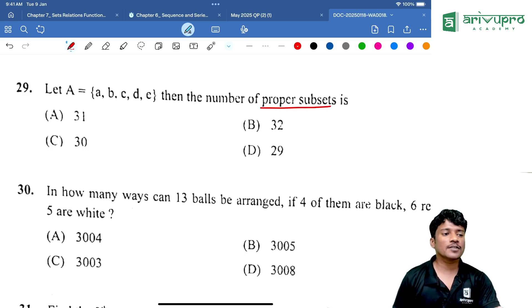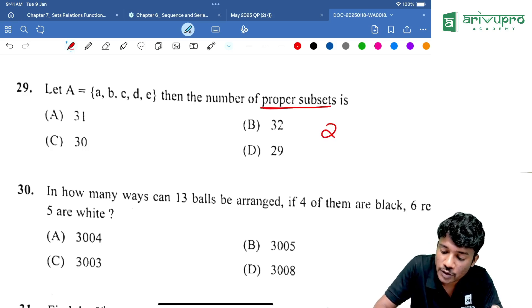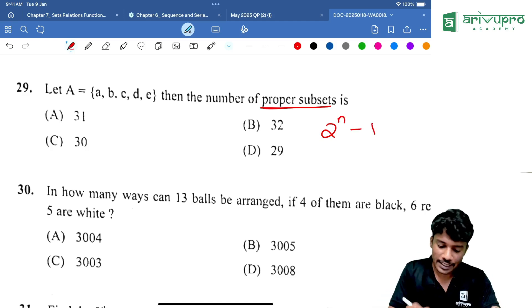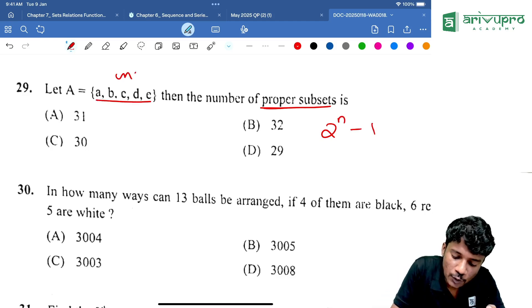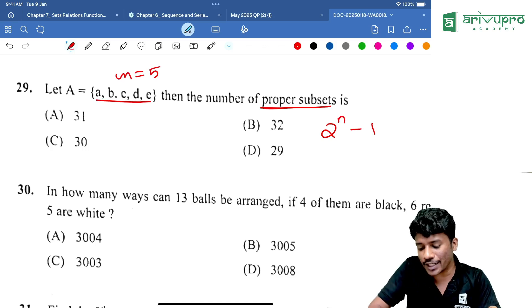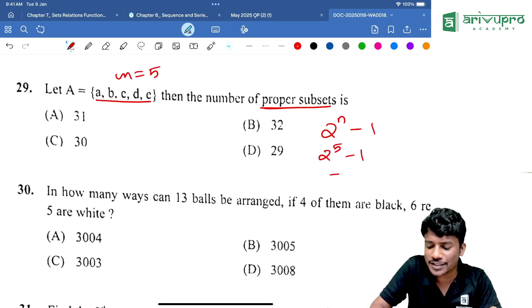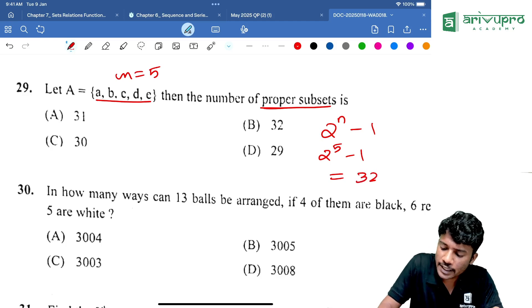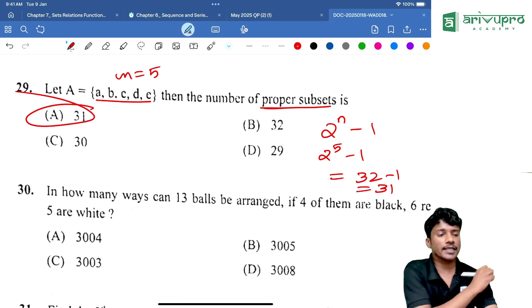Proper subset, what is the formula? Proper subset means 2 raised to n minus 1. Here n value is how much? n is equal to 5. That means 2 raised to 5 minus 1 is equal to how much? 32 minus 1. That is 31. Option A is the answer.